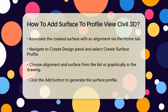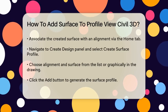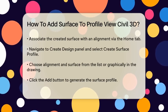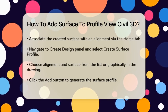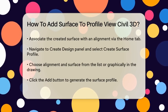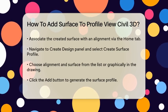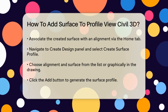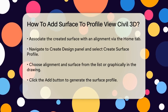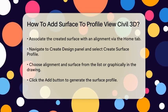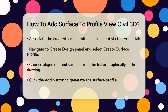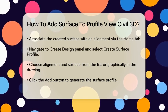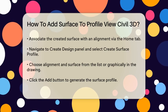Once your surface is created, you need to associate it with an alignment. Go to the Home tab on the ribbon, navigate to the Create Design panel, and select Create Surface Profile. Here, you can choose the alignment and the surface you want to use. Select the surface from the list or pick it graphically from your drawing, then click the Add button to create the surface profile.